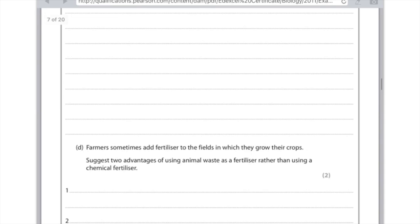D, farmers sometimes add fertilizers to the fields in which they grow their crops. Suggest two advantages of using animal waste as a fertilizer rather than chemical fertilizers. Okay, for question one, this is a nice question. For mark one, you could say that it's cheaper to use animal waste.